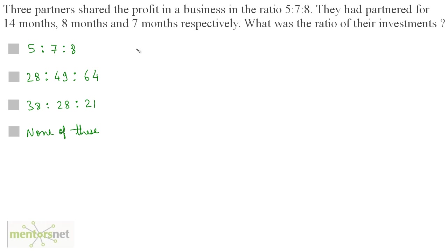Let the investments made by these partners be x, y and z. Now we know the time periods of the investments of these partners, which is 14 months, 8 months and 7 months respectively. And we have also been given the ratio of their profits, which is 5 is to 7 is to 8.